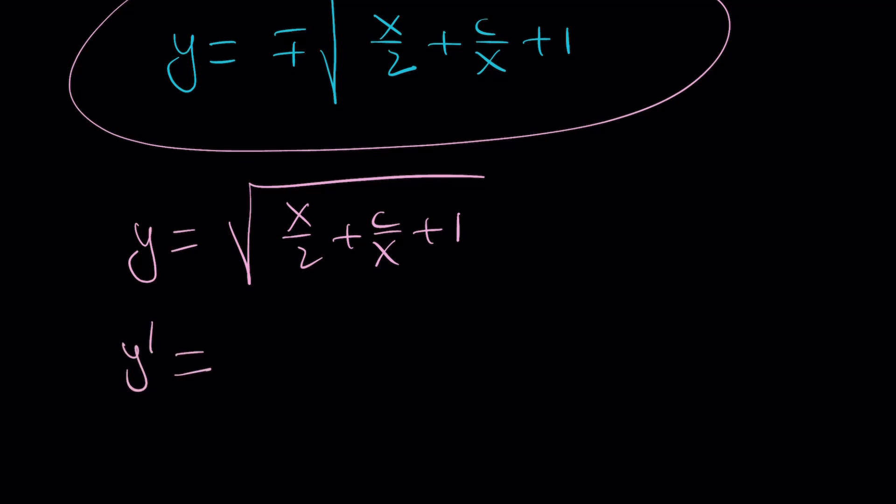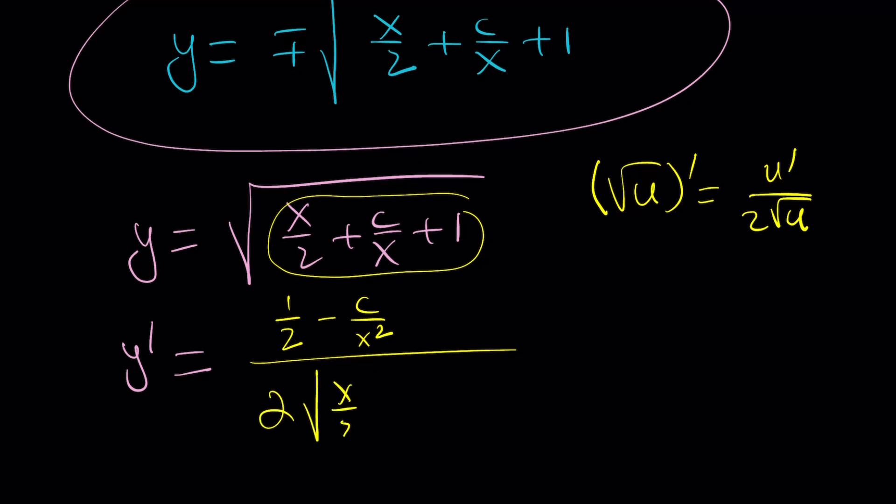With the chain rule, if you differentiate the square root of u, you get u' divided by 2√u, something you memorize in calculus. Very helpful. So you have to differentiate the inside. The derivative of x/2 is 1/2. The derivative of c/x is -c/x². The derivative of 1 is 0. Then we're going to divide it by 2 times the same function. And that will give us y'.